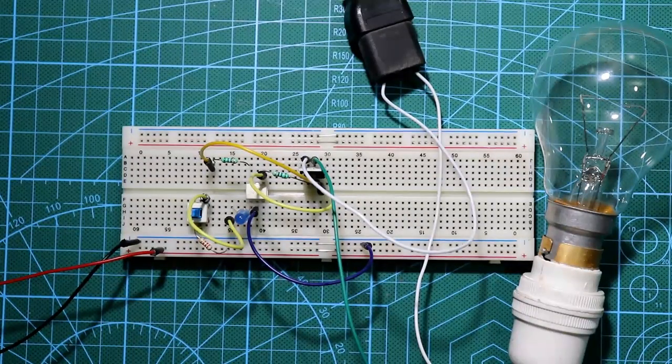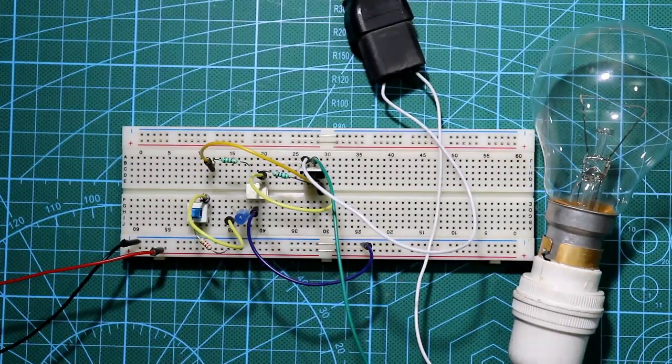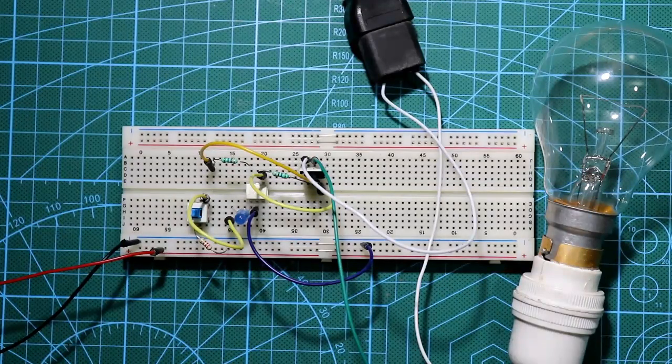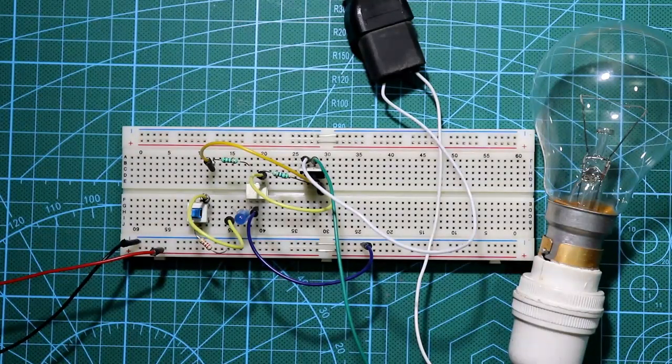Hello guys, in this video I'll show you how to combine the optocoupler MOC 3021 and triac BT 136 so we can control high voltage device with low voltage circuit. So let's get started.